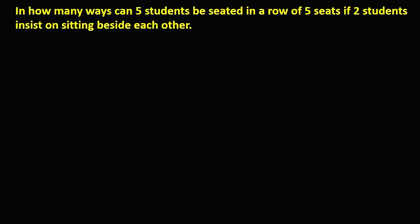For this next problem: in how many ways can 5 students be seated in a row of 5 seats if 2 students insist on sitting beside each other? We have students A, B, C, D, and E, where students D and E insist on sitting beside each other.